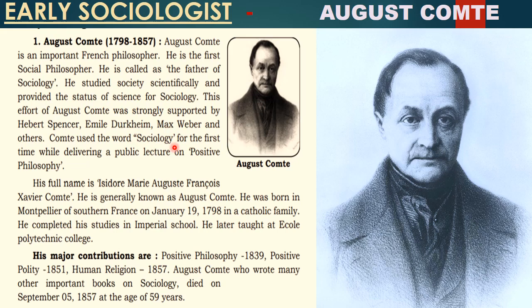His name is Auguste Comte, so don't think he was born in the month of August — he was born in January 1798 in a Christian Catholic family, in southern France in Montpellier. He completed his studies in an imperial school and later started teaching at Ecole Polytechnic College, where he became a professor.